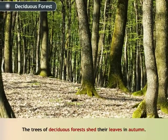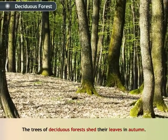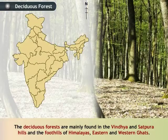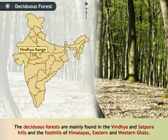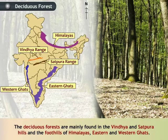The trees of deciduous forests shed their leaves in autumn. The deciduous forests are mainly found in the Vindhya and Satpura hills and the foothills of the Himalayas, Eastern Ghats and Western Ghats.